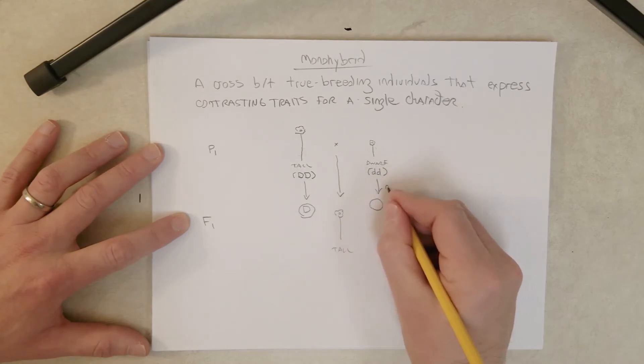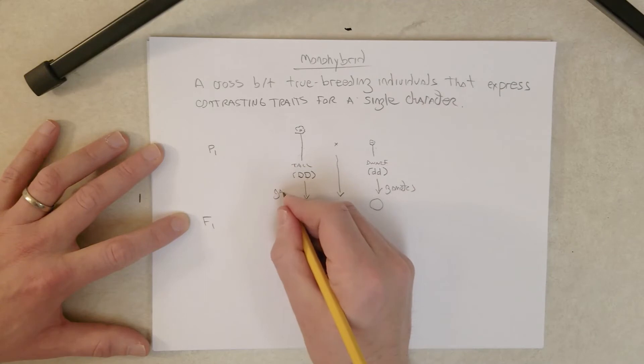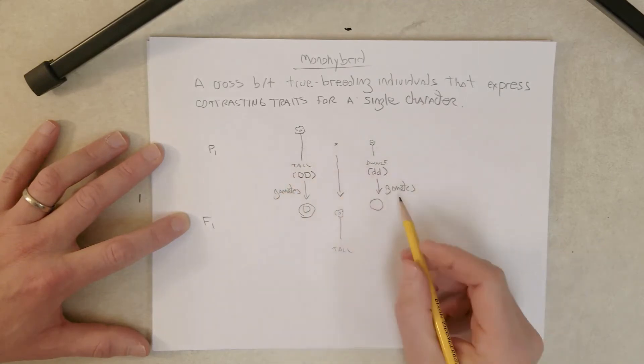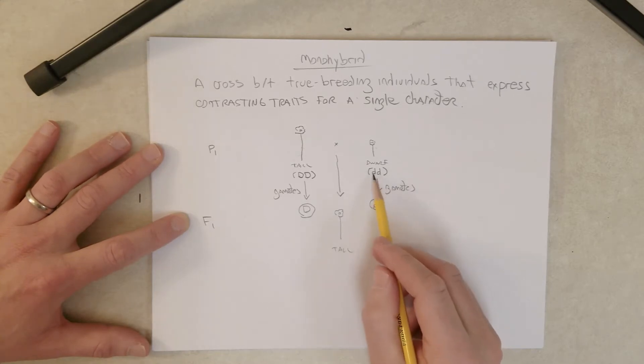For this one here, put gametes here. For this one right here, all of the gametes have to have a little d allele because there are only little d alleles in this parent here.